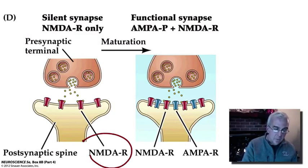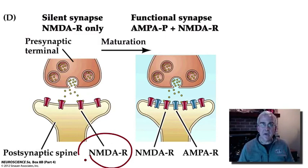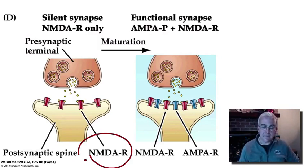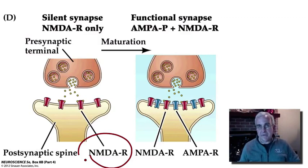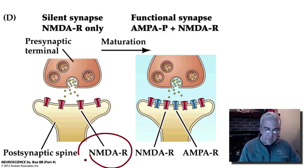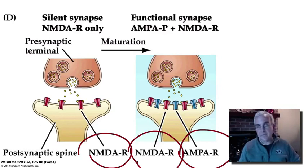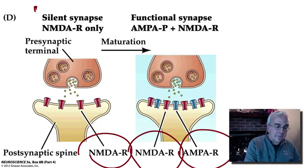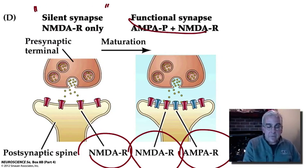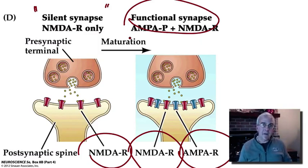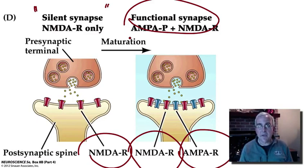These silent synapses — with NMDA receptors present but insufficient AMPA receptors — are found frequently, especially in the developing brain. However, with stimuli that can induce long-term potentiation, which can accrue during the course of development, we see the insertion of AMPA receptors to accompany the NMDA receptors. In this way, a silent synapse is awakened into a functional synapse, involving both NMDA receptors and a complement of AMPA receptors sufficient to mediate the effect of synaptic glutamate even without significant depolarization.